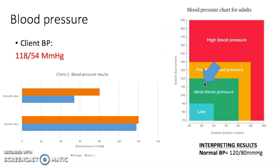It's better to have a blood pressure that is lower rather than higher. Low blood pressure would be less than 90 over 60, and high blood pressure would be 140 over 90. High blood pressure is associated with hypertension, which increases the risk of heart attacks and strokes. Low blood pressure causes dizziness and fainting in some cases. My client is not too high or too low, so he has a very good blood pressure — it's kind of average, which is really good.